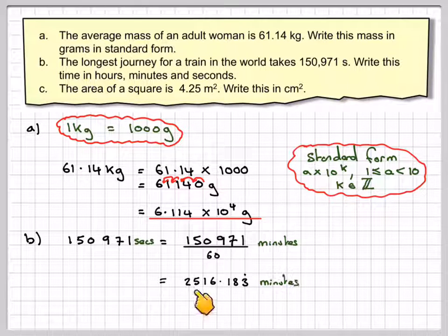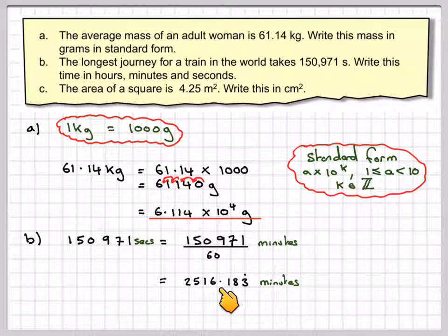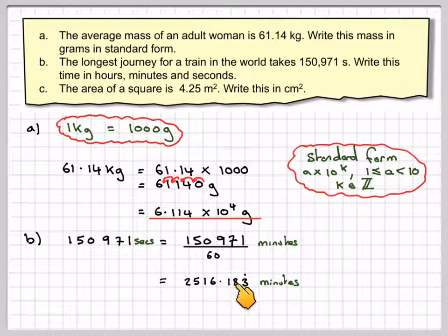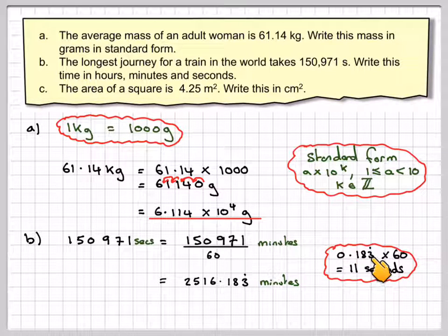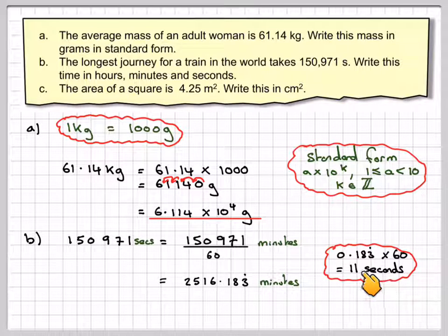If I do that on my calculator, I'm going to get 2,516.183 minutes. So these are the whole minutes, and this is part of a minute. So now I'm going to deal with this part of a minute — 0.183 recurring times 60. If I do that on my calculator, I get 11. So it's 11 seconds.